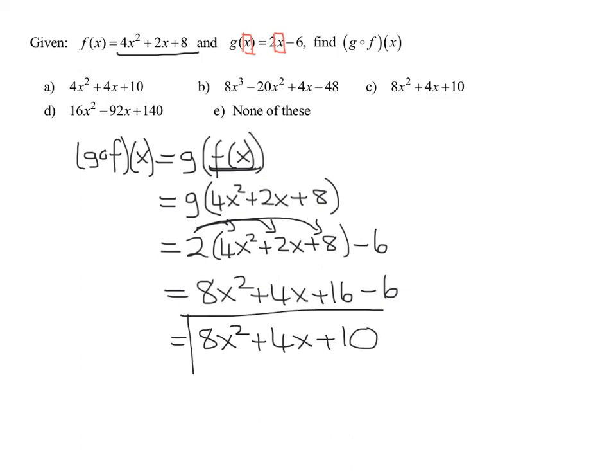And is it any of these answers? Definitely not a. Oh, whoa, definitely not b. How about c? 8x squared plus 4x plus 10. So, my answer looks like c. Let's double check. Make sure nothing like d or e. So, what's the answer? The answer is c. We'll see you next time.